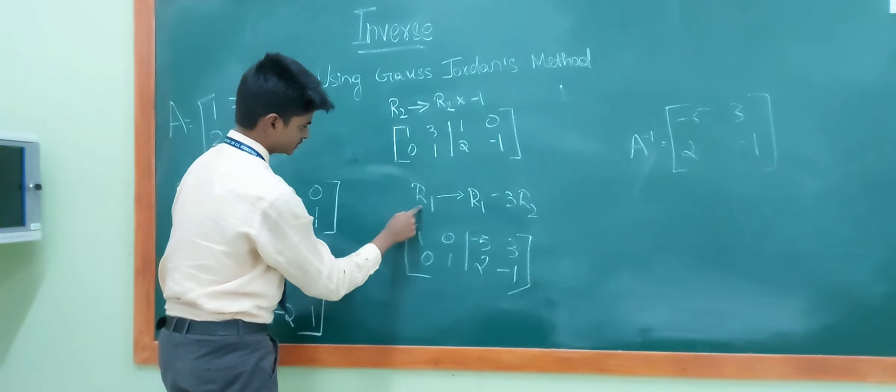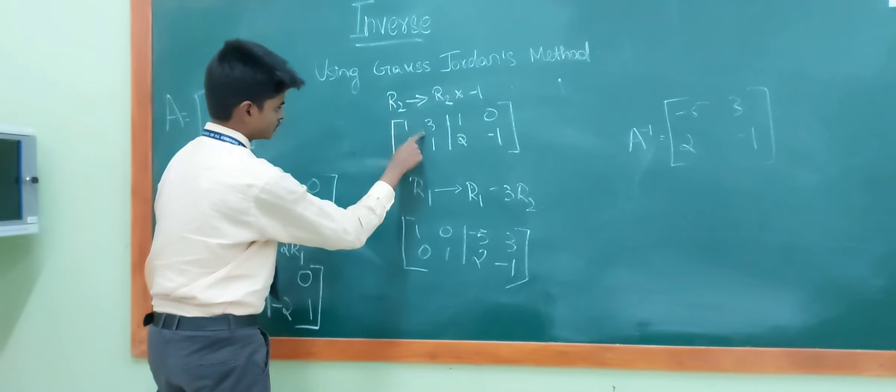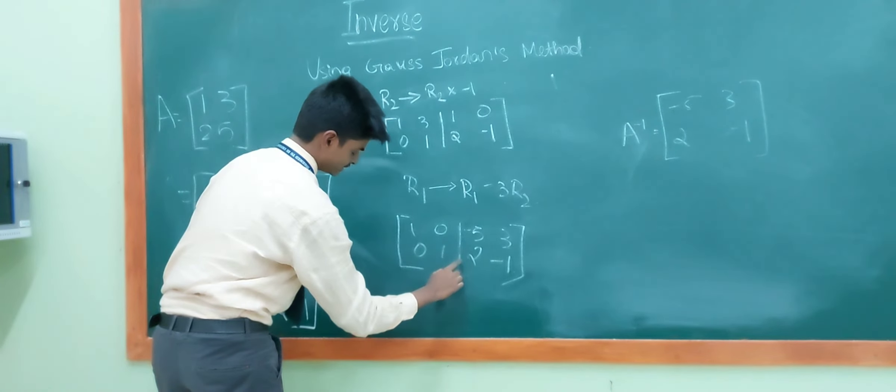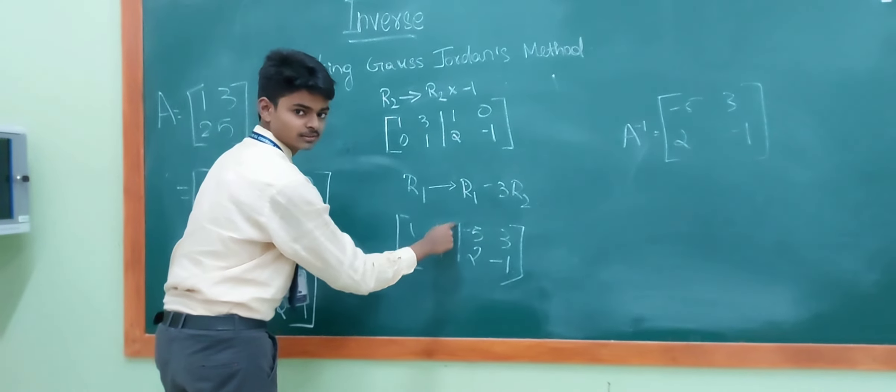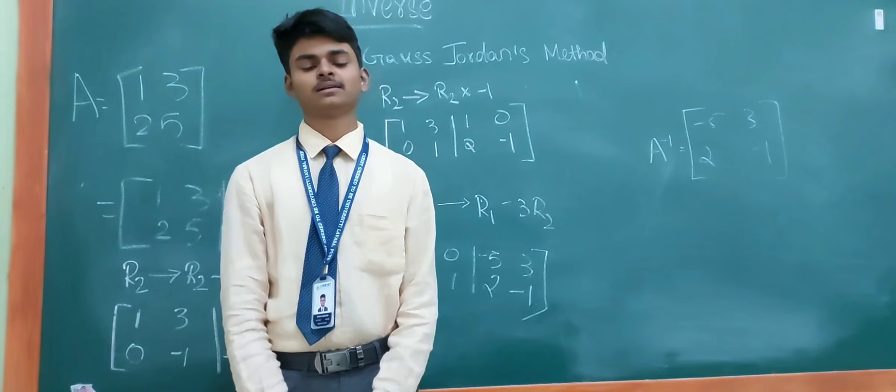That is r1 is equal to r1 minus 3r2. By doing this, we will convert the 3 over here to 0 so that we get the inverse of A. That is minus 5, 3, 2, and minus 1.